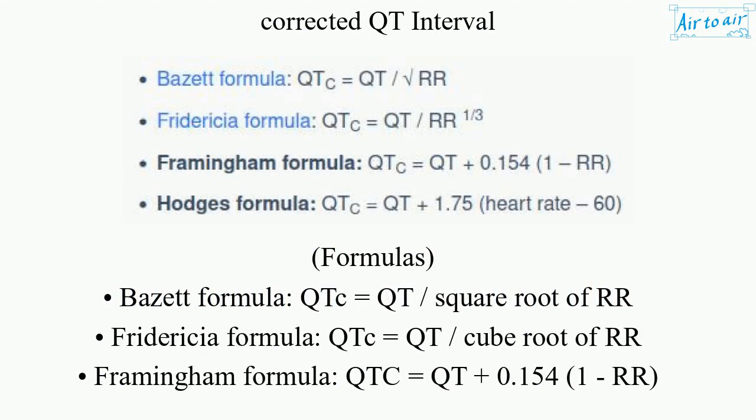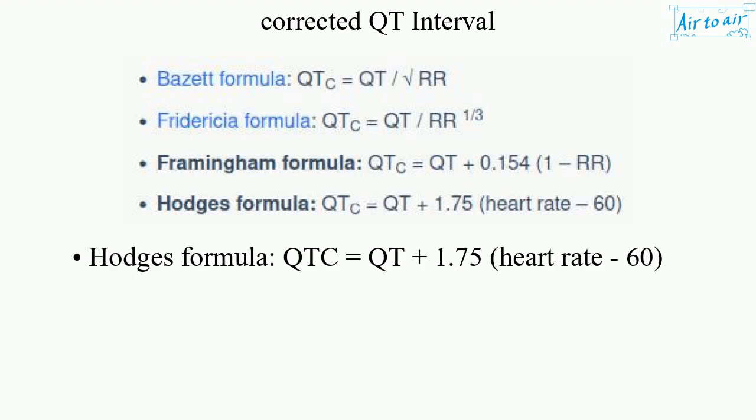Formulas: Bazett formula — QTc equals QT divided by the square root of RR. Fridericia formula — QTc equals QT divided by the cube root of RR. Framingham formula — QTc equals QT plus 0.154 times (1 minus RR). Hodges formula — QTc equals QT plus 1.75 times (heart rate minus 60).